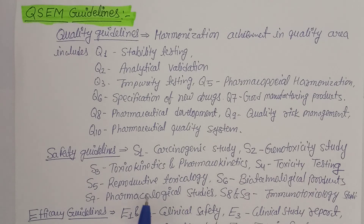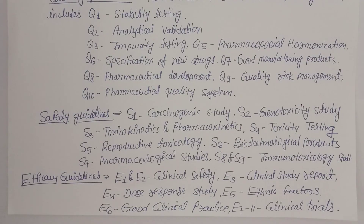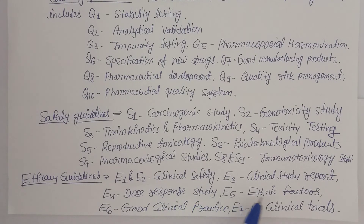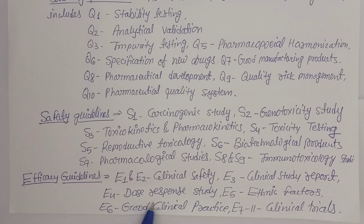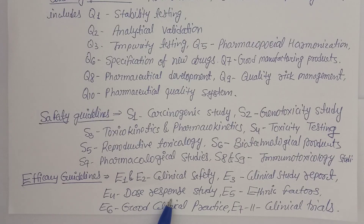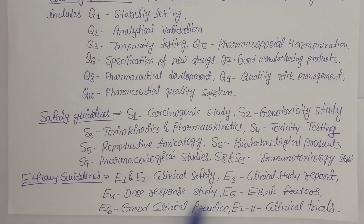These safety guidelines provide the framework for assessing herbal drugs on safety parameters. For efficacy guidelines, E1 and E2 address clinical safety. E3 covers clinical study reports — recording adverse actions, side effects such as nausea, vomiting, dizziness, and hair fall observed in human volunteers. E4 covers dose-response studies — observing patient responses to low, medium, and high doses during clinical trials. E5 addresses ethnic factors, E6 good clinical practice, and E7 to E11 cover clinical trial phases one through four, including post-marketing surveillance.